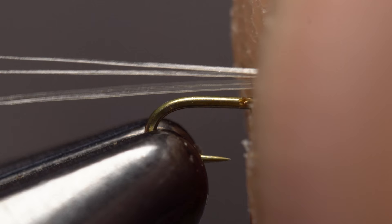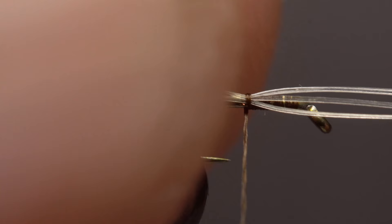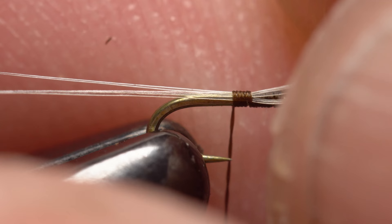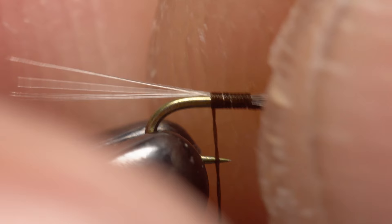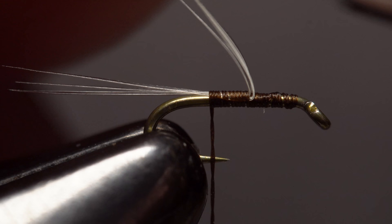Measure to form a tail about a full hook in length and transfer that measurement rearward to the start of the hook bend. Using a pinch wrap, begin securing the hackle fibers to the top of the hook shank with wraps of tying thread. After three or four wraps, check and make micro adjustments to the tail length if necessary. Continue taking thread wraps rearward all the way to the start of the hook bend. Lift the excess butt ends of the hackle fibers up to vertical and snip them off close.